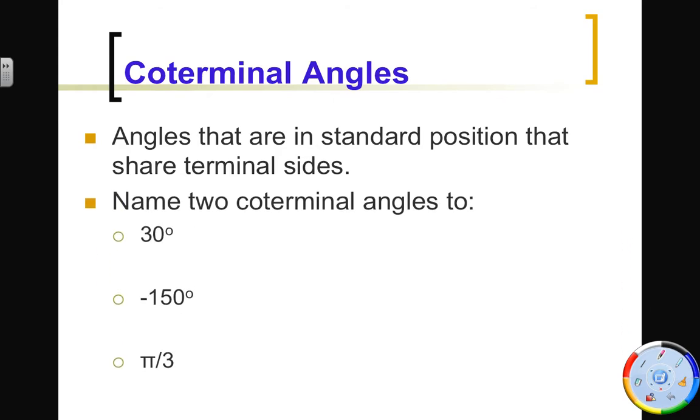So I could name two coterminal angles to each of these things. So if you think about this right in here, here's 30 degrees. I could go the opposite direction to get the negative angle. So I could say it was negative 330 degrees. Or I could just add 360 to this. So I could go to 30 and then I could go all the way around again and I can get 390. And then just add 360 again and again and again. And notice why I said only 2 because we could go forever here.